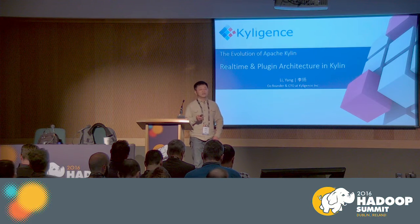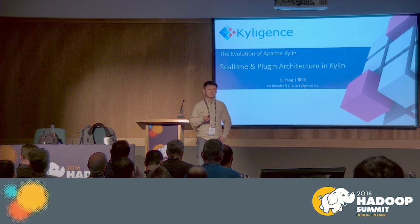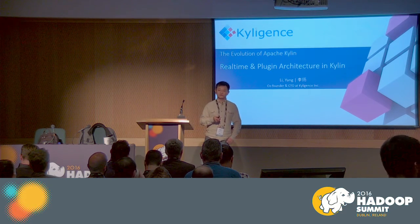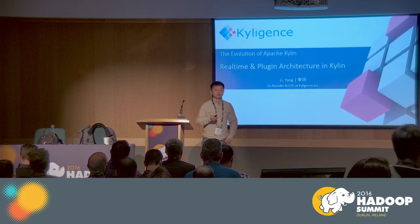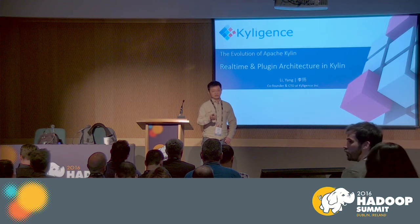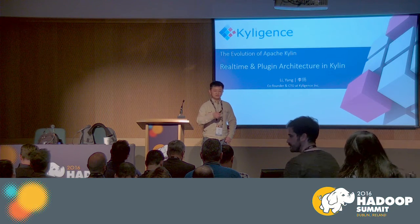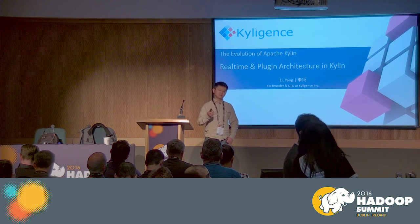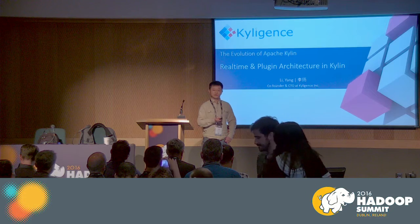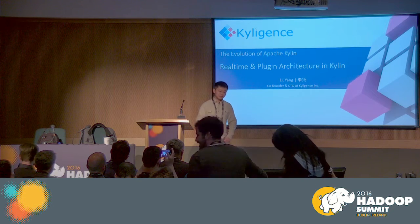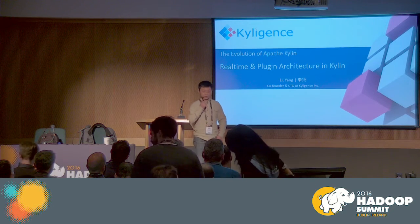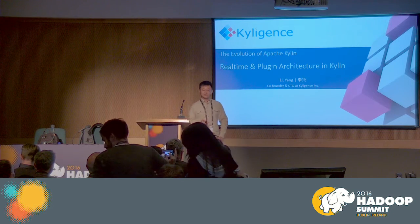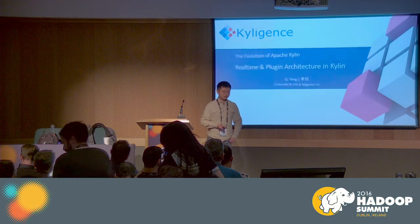By the way, the latest version of Apache Kylin is 1.5. The version number went through a revision during the time we prepared the presentation, so just to be clear, the latest version is 1.5.